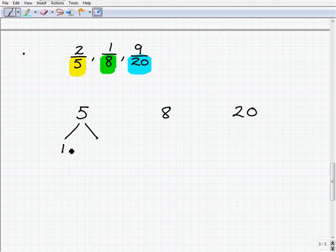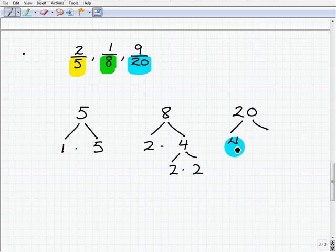So 5, once again, prime factors as 1 times 5. 8 is 2 times 4 or 2 times 2 times 2. And we'll write this down here nice and neat in a second. 20 is going to be 4 times 5 or 2 times 2 times 5. So let's go ahead and write 20.